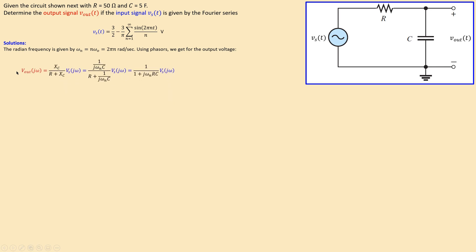The output equals the capacitor reactance divided by the total impedance, which is R plus X_C. Working out the reactance of the capacitor and substituting R = 50 ohms and C = 5 farads, we arrive at a simplified transfer function expression that we will use for both the DC and AC response analysis.